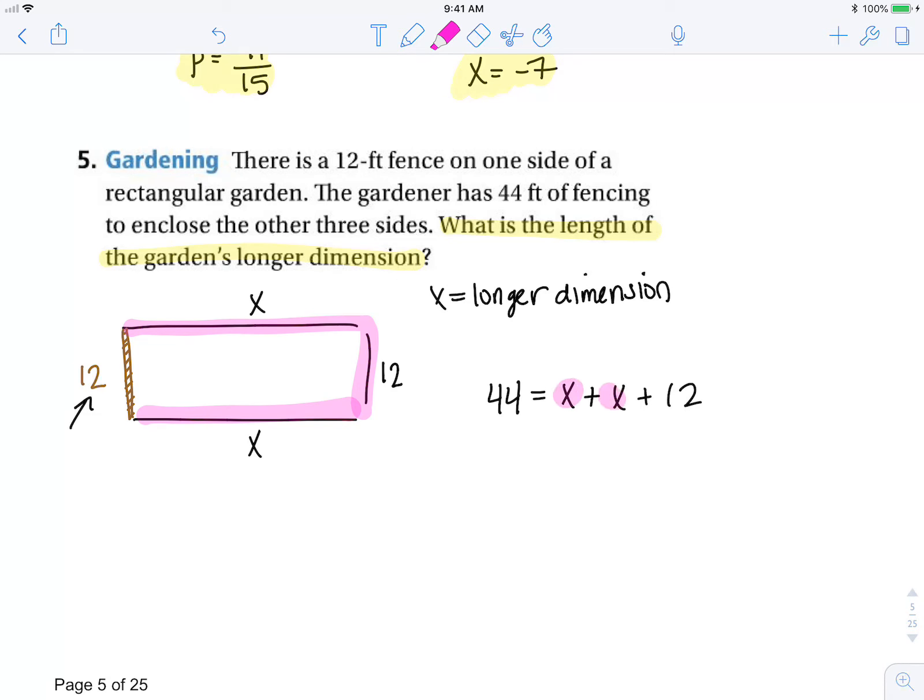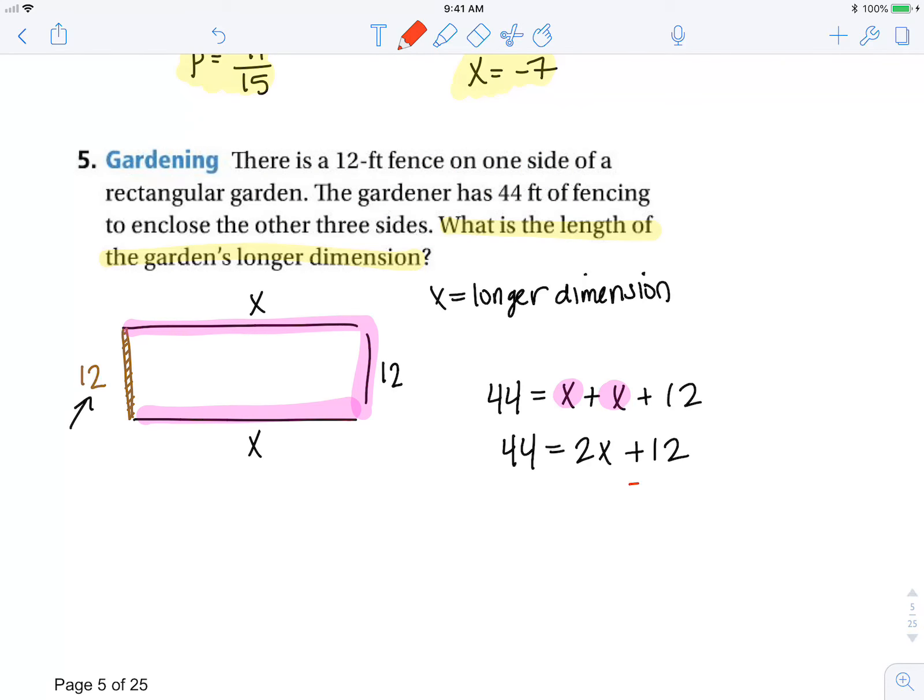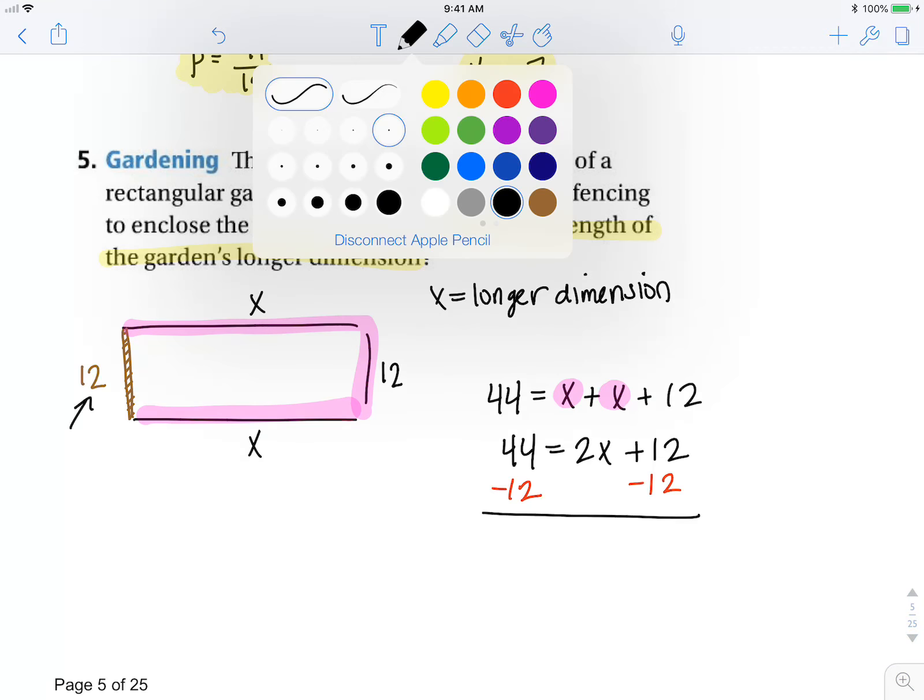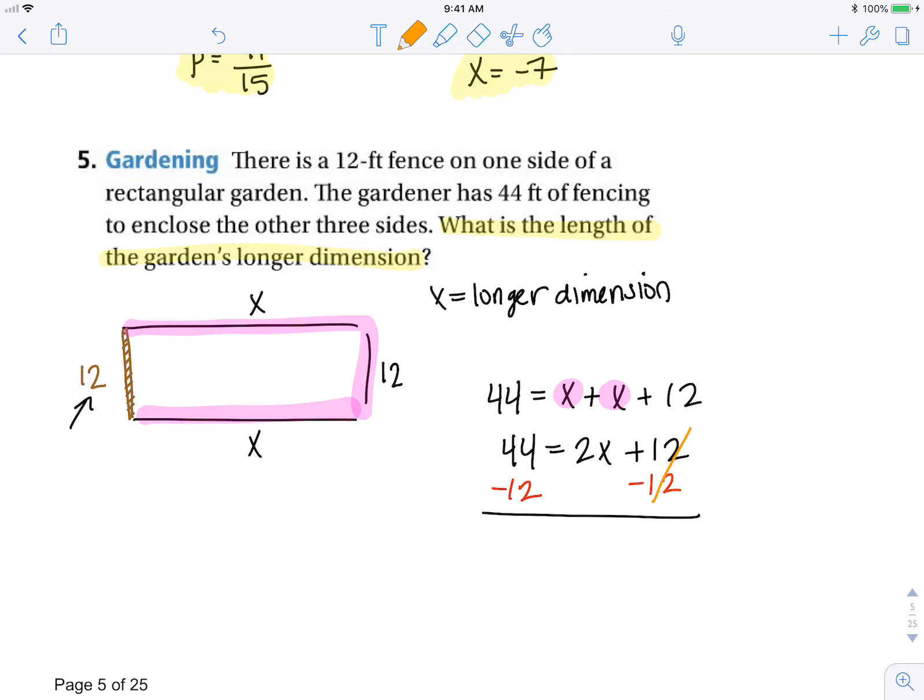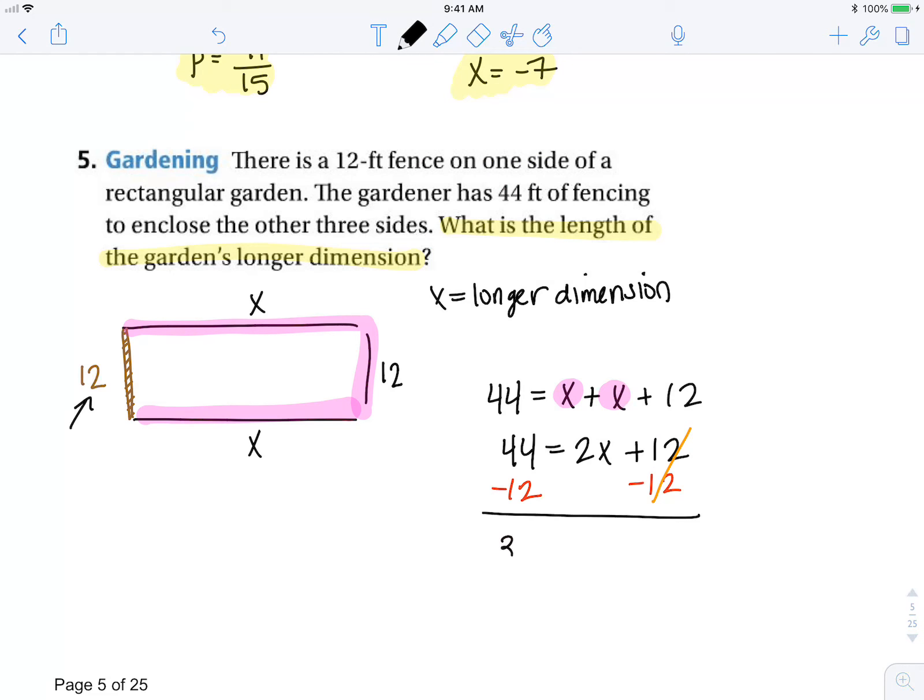Combining like terms to simplify, we have 44 equals 2x plus 12. So now we have a two-step equation, which I will undo addition first by subtracting 12.